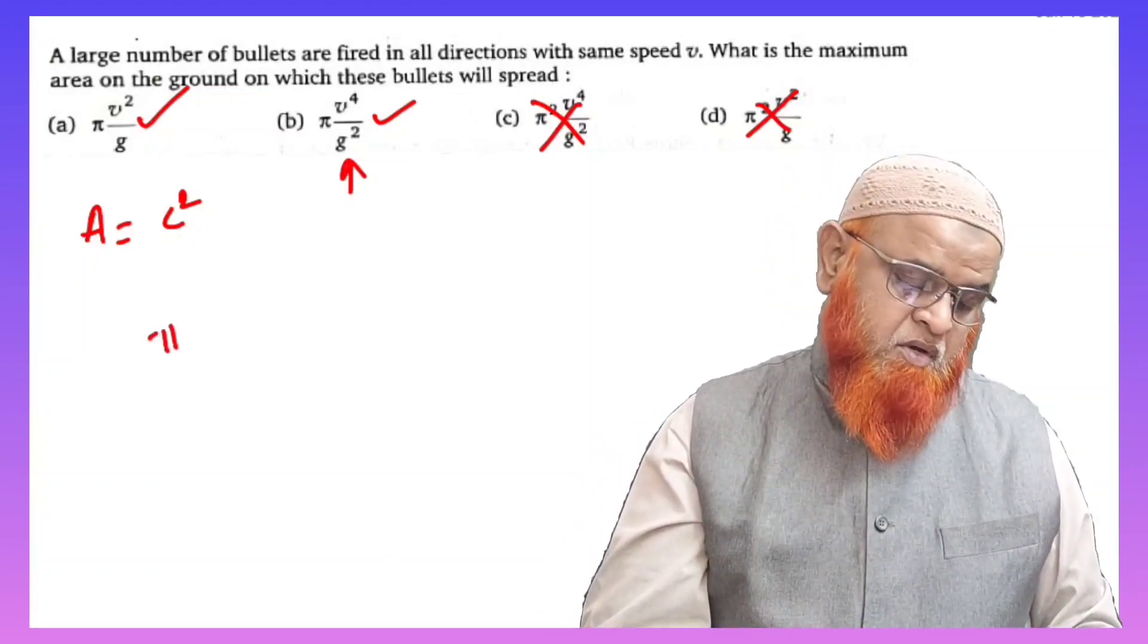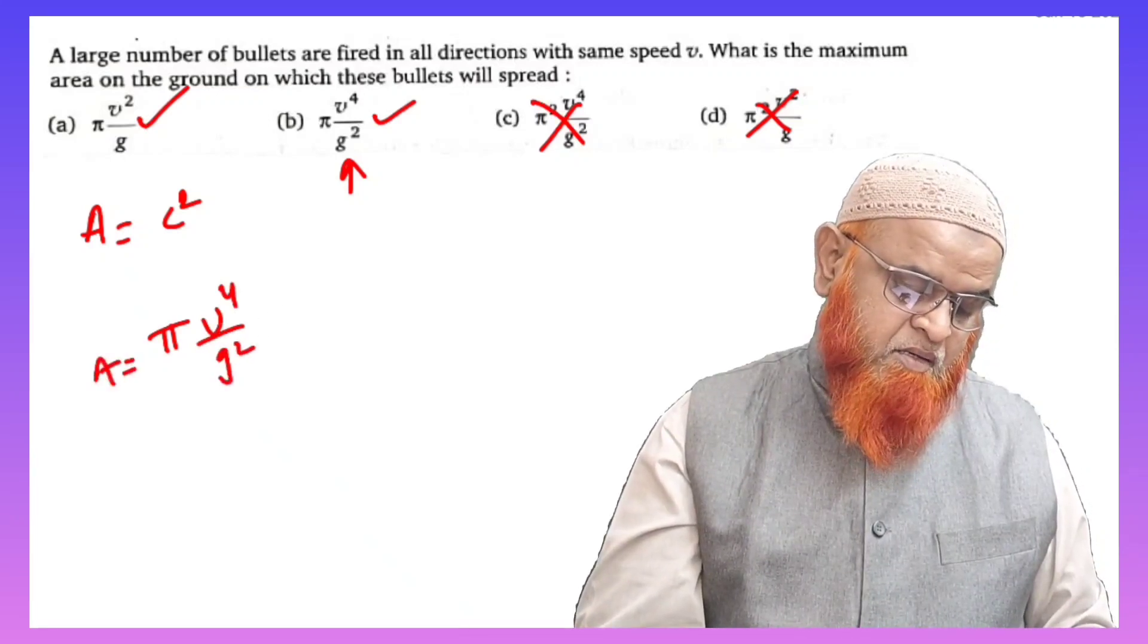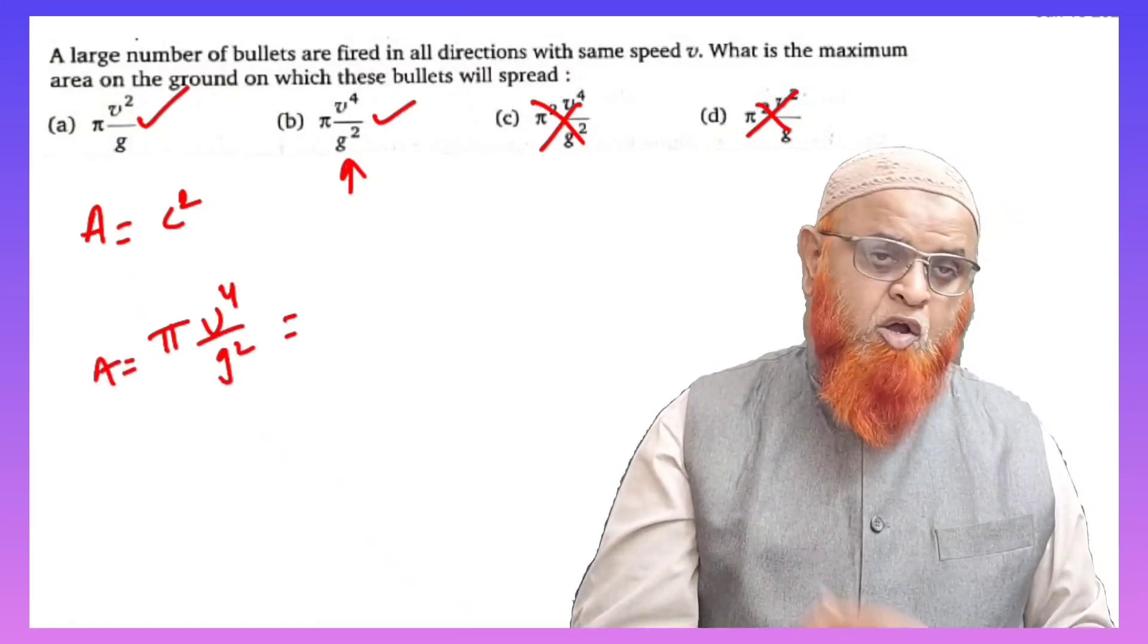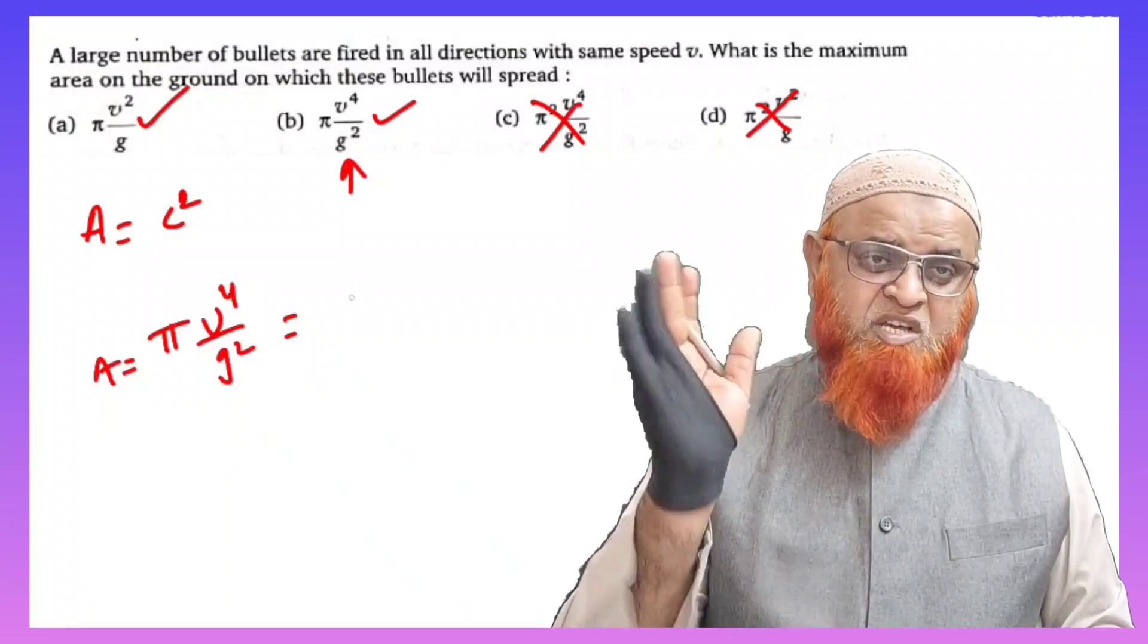So πv⁴/g². That is the formula for area. Now, if you get L² as the dimensional formula, then this is going to be the correct answer. Let us see.